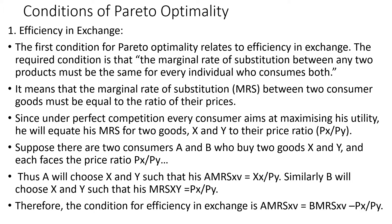Since under perfect competition every consumer is maximizing his utility, he will equate his marginal rate of substitution for two goods X and Y to their price ratio PX/PY. Suppose there are two consumers A and B who buy two goods X and Y, and each faces a price ratio PX/PY. A will choose X and Y such that his MRS_XY equals PX/PY. Therefore, the condition for efficiency in exchange is: MRS_XY of A = MRS_XY of B = PX/PY.